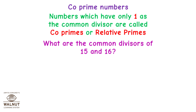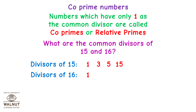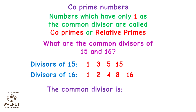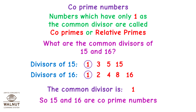What are the common divisors of 15 and 16? Divisors of 15 are 1, 3, 5 and 15. Divisors of 16 are 1, 2, 4, 8 and 16. The common divisor is 1. So 15 and 16 are co-prime numbers.